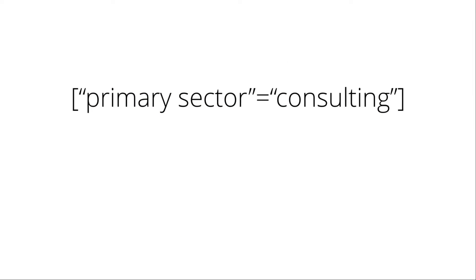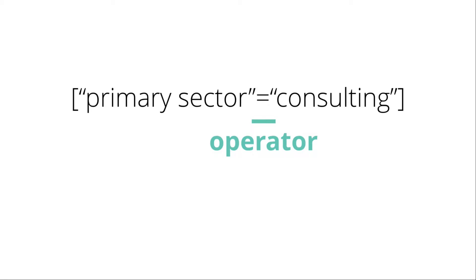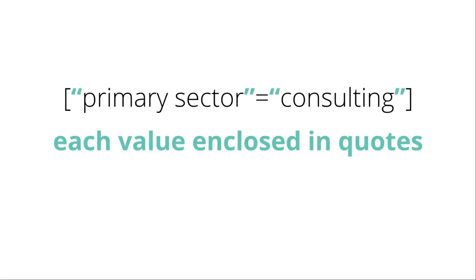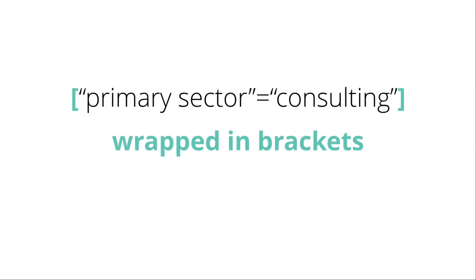So this is a selector. At its most basic, it's a combination of a field, an operator, and a value. This is essentially a selector saying we're trying to select anything that has the value 'consulting' for the field 'primary sector.' Each side is enclosed in quotes — so 'primary sector' is enclosed in quotes and 'consulting' is enclosed in quotes — and the whole thing is wrapped in brackets. So that's the basics of a selector.